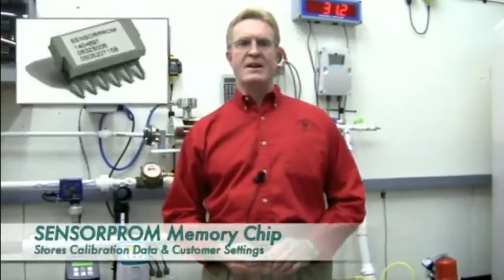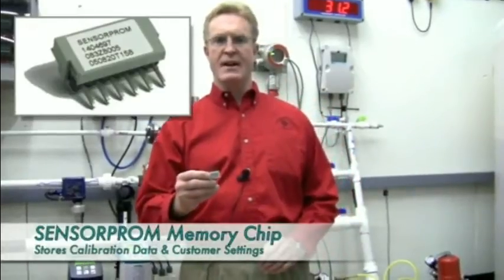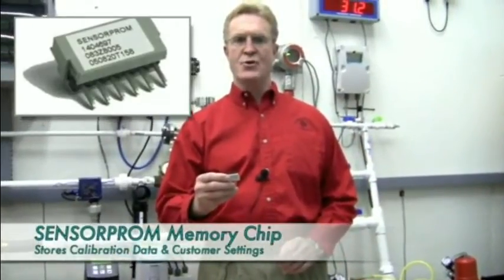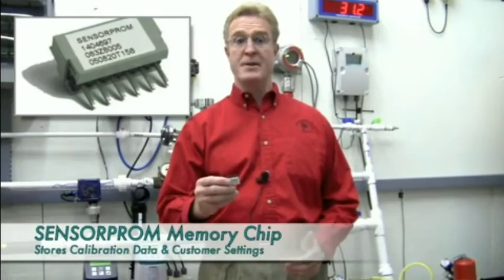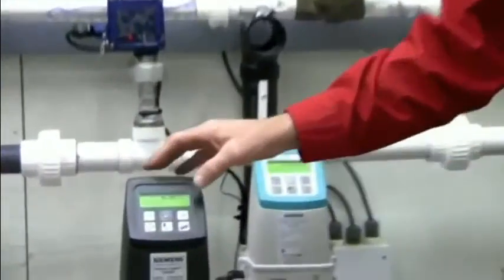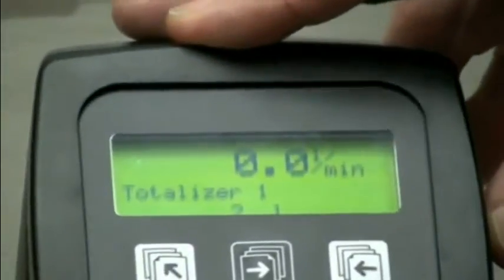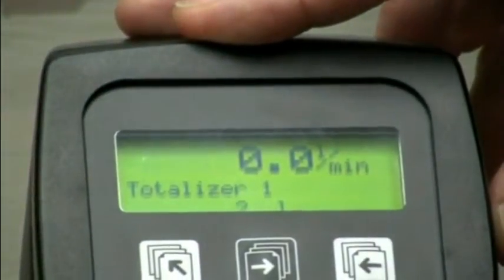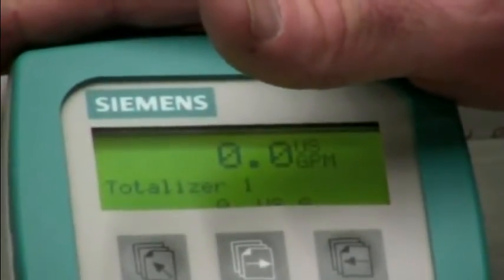Each mag body contains a chip to retain calibration data and customer setup to allow true plug-and-play for replacement of transmitters. As you can see, the black transmitter is configured in liters per minute and totalizing in liters, while the line-mounted beige transmitter in our flow lab is rating in GPM and totalizing in gallons.